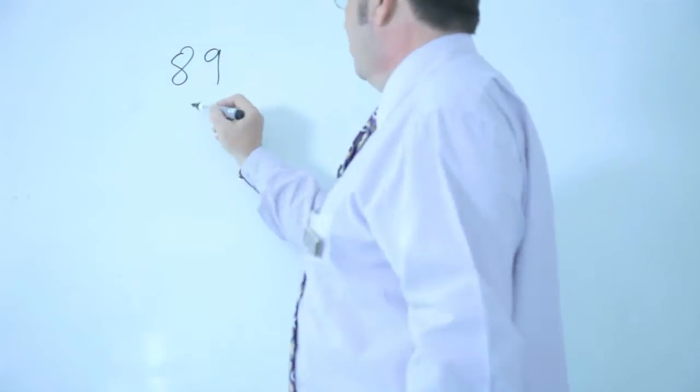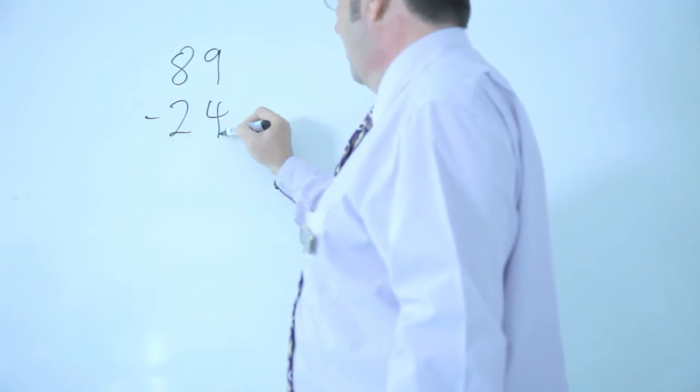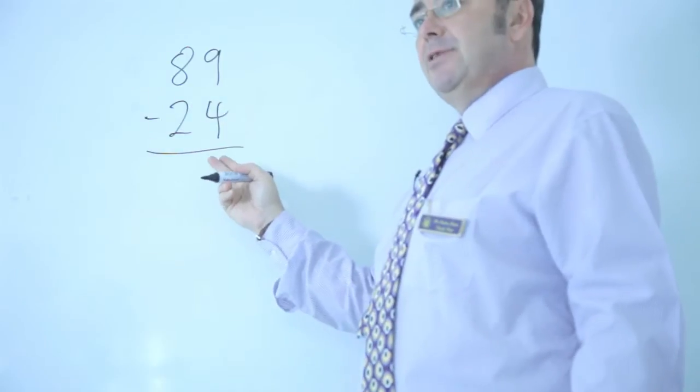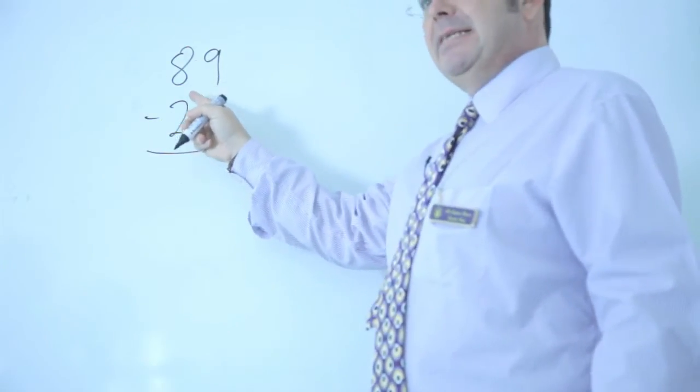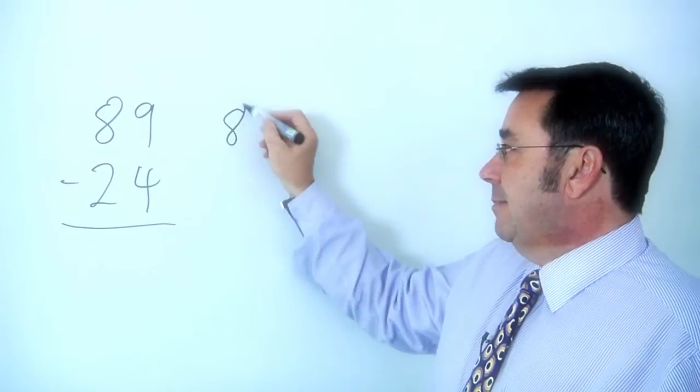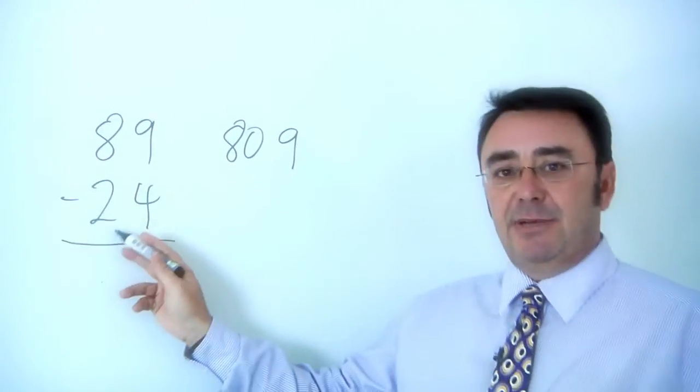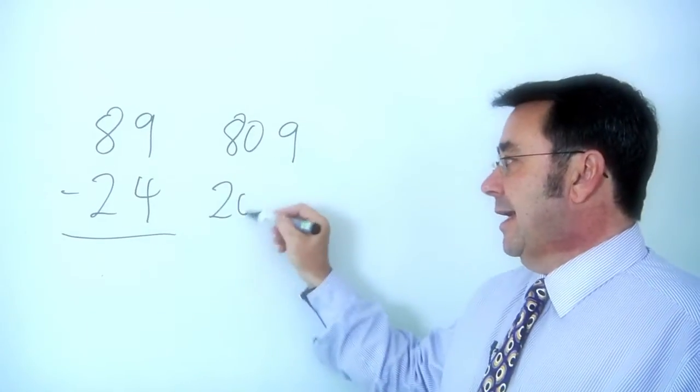I'll take 89, subtract 24. And I will be thinking to myself, what do these numbers break down into? Well, I'm going to break them into their tens and units. So 89 becomes 80 and 9, and then 24 becomes 20 and 4.